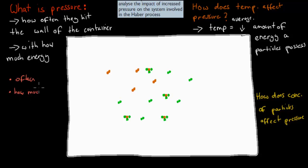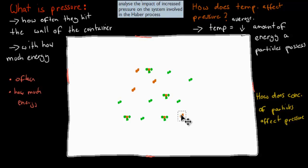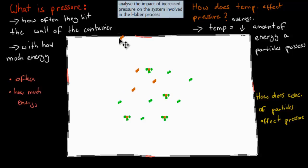I'll quickly go over what that means. For example, this is your container here, these are your walls. And inside, you have your particles. Now, if you have lots of space, the chance of them hitting would be lower than if the space was less. Pressure itself is how often the particles hit the actual size of the container.